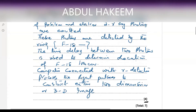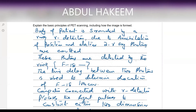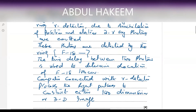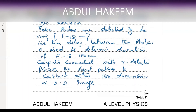To repeat the answer: the body of the patient is surrounded by the ring gamma detector. Due to annihilation of the positron and electron in the patient body, two gamma ray photons are emitted. These photons are detected by the ring, and they come from the fluorine-18 isotope. The time delay between the two gamma photons is used to determine the location of the diseased cell — the F-18 location. A computer connected with the gamma detector processes the light pulses produced by this process to construct either a two-dimensional or three-dimensional image.